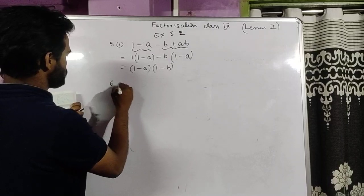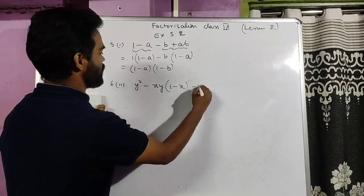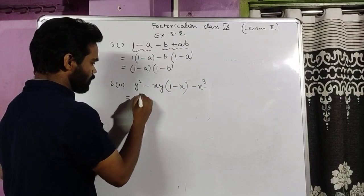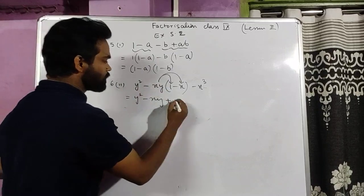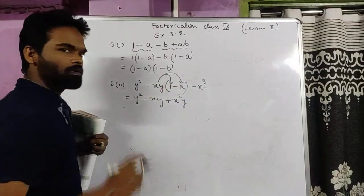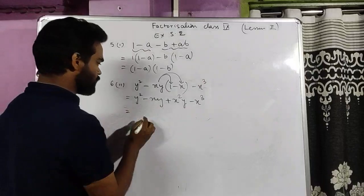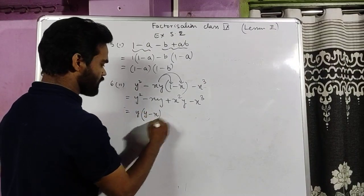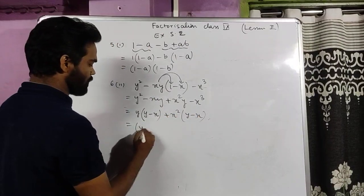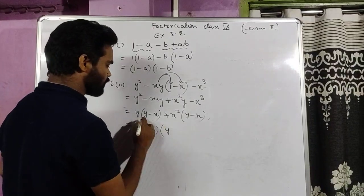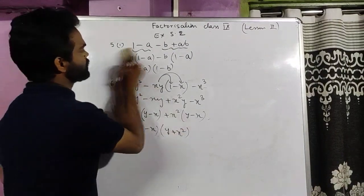Sum 6 part 2: y² minus xy(1 minus x) minus x³. First we open the bracket: y² minus xy plus x²y minus x³. These are already arranged. Taking y common from the first two: y(y minus x). Taking x² common from the last two: x²(y minus x). In both expressions (y minus x) is common, leaving y and x². Factorized: (y minus x)(y plus x²).